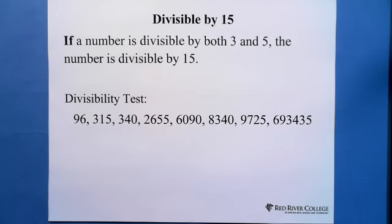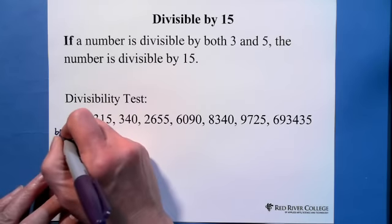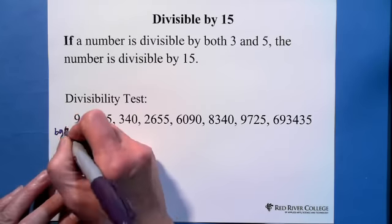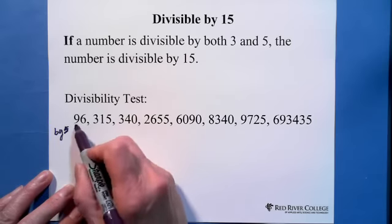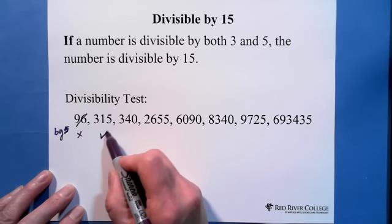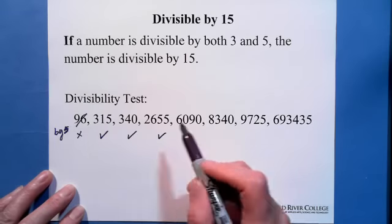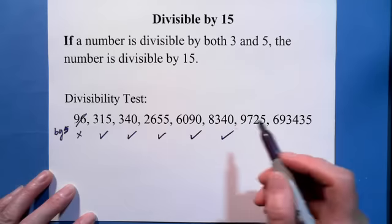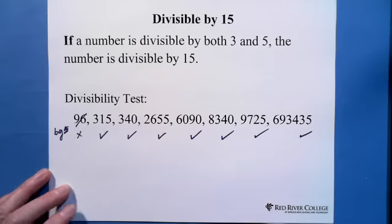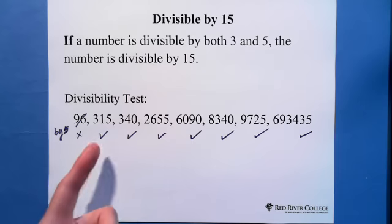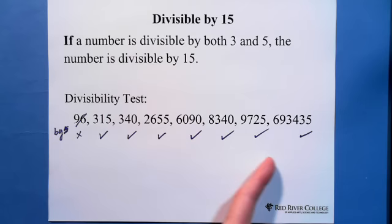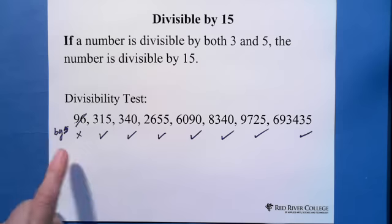So let's look at those numbers. First, let's check by 5. This one is not — ends in a digit that's not 0 or 5. These others end in 0, 5, 0, 0, 5, 5. So all these numbers except 96 are divided by 5.